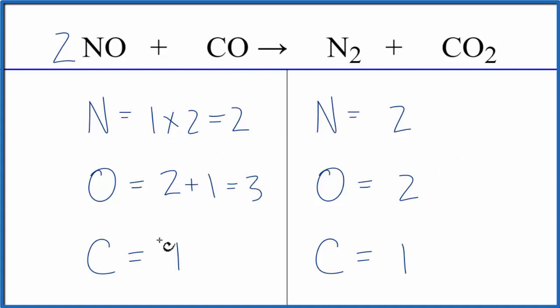So this is kind of difficult. Everything's balanced except the oxygens, and I have an odd number. When I get an odd number like this, I really like to make that into an even number. So if I were to put a 2 in front of the CO,